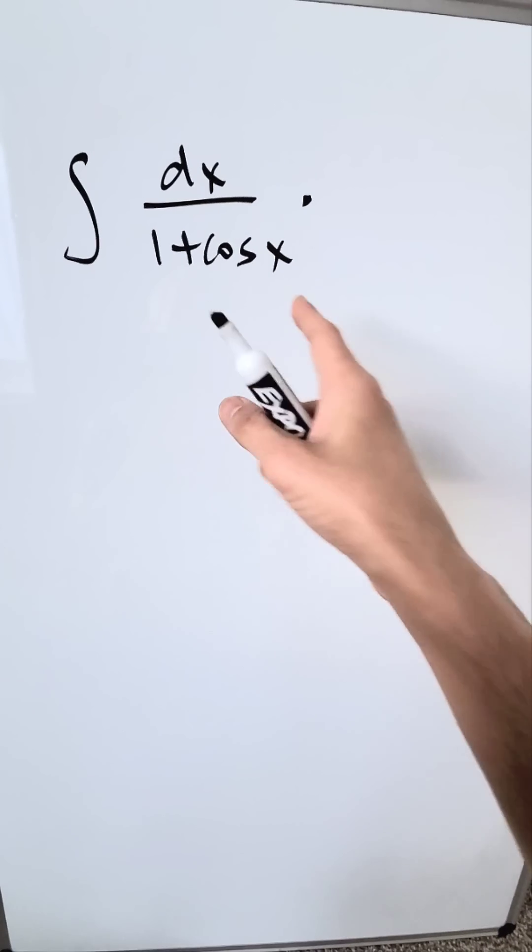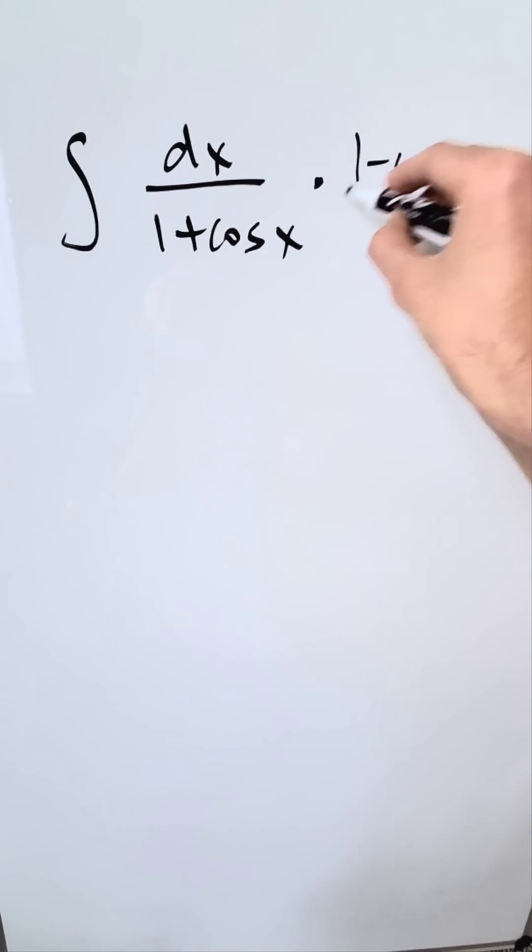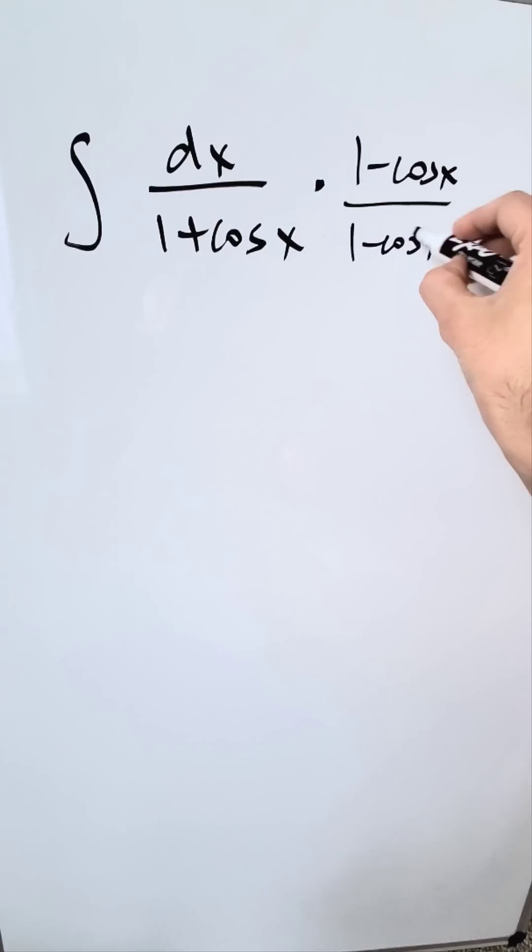You're going to use here rationalizing by means of conjugates. Multiply everything here with 1 minus cosine x numerator and denominator.